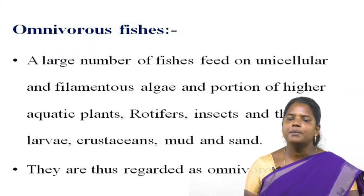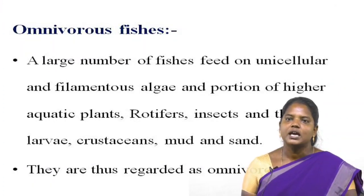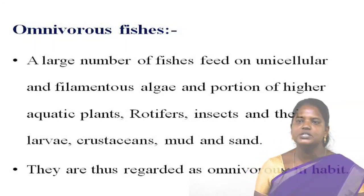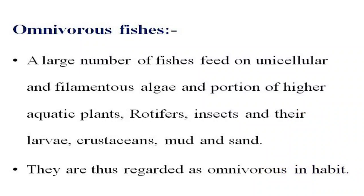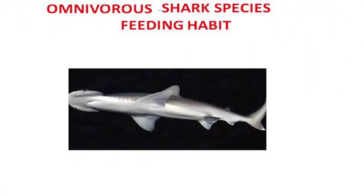What is meant by omnivorous feeding habit of fishes? A large number of fishes feed on unicellular and filamentous algae and portions of higher aquatic plants, rotifers, insects and their larvae, crustaceans, mud and sand. They are thus regarded as omnivorous in habit. An example of omnivorous feeding habit is the shark species.